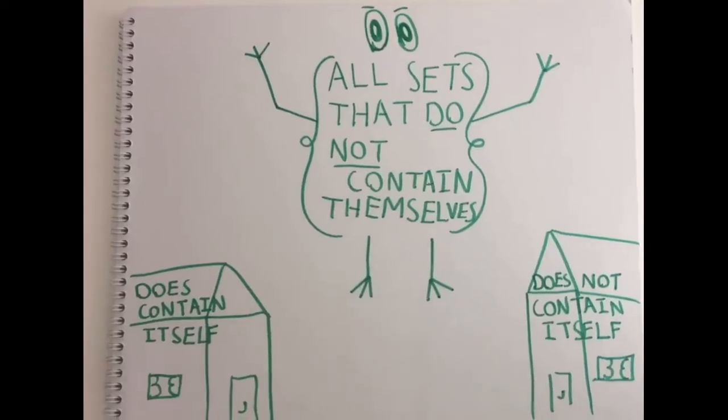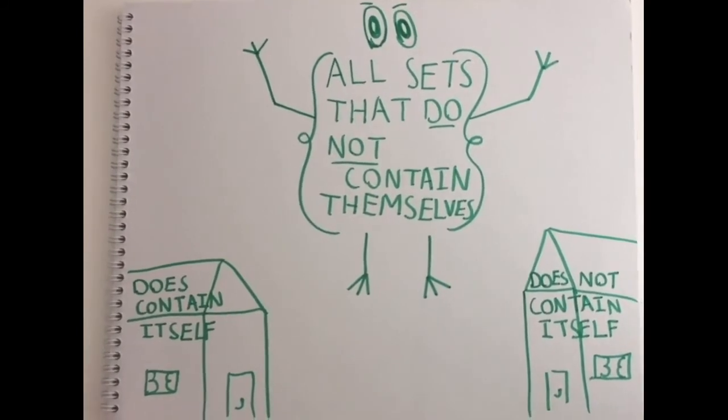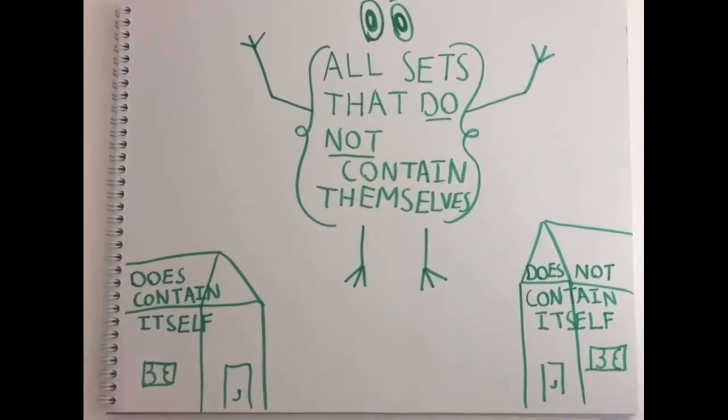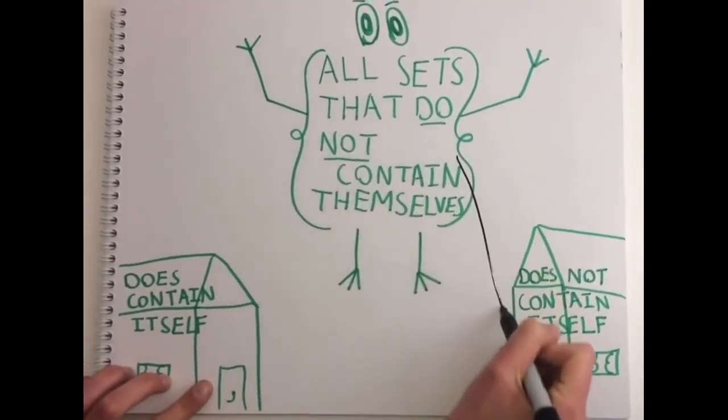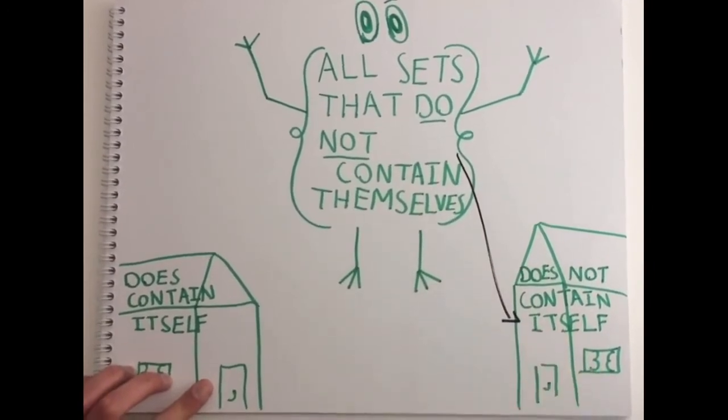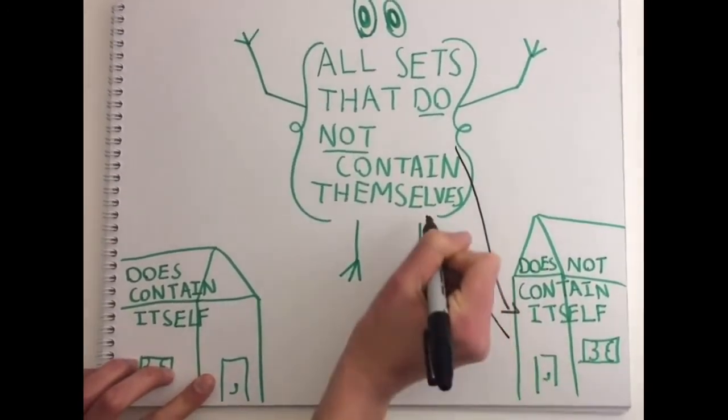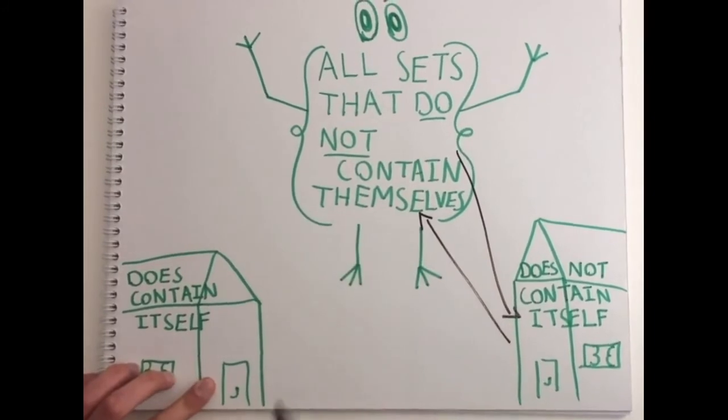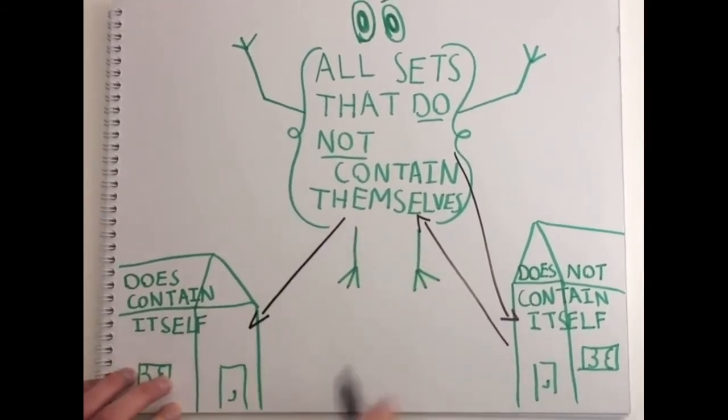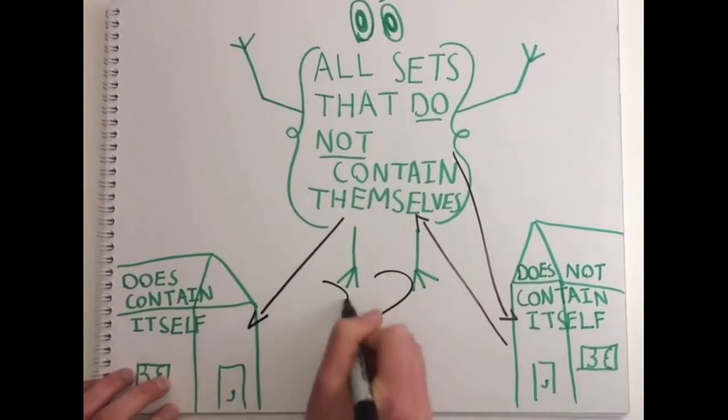Think about it. If the set of all sets that do not contain themselves does not contain itself, then it means that it should be in the set. But then, if it's in the set, then it does contain itself. So, it shouldn't be.